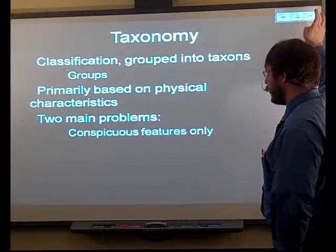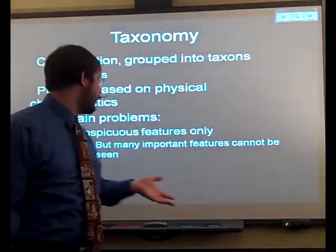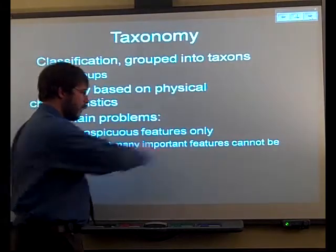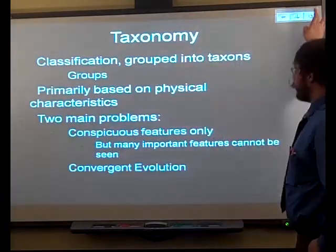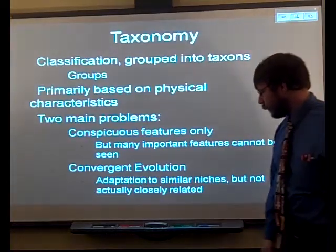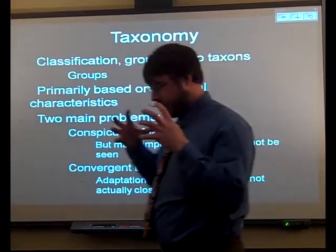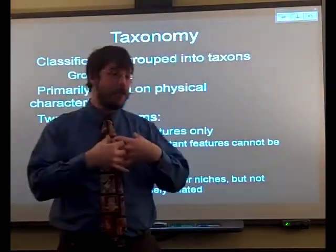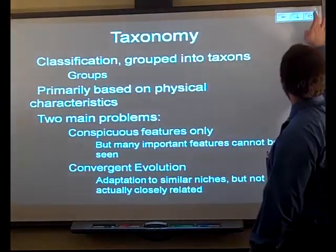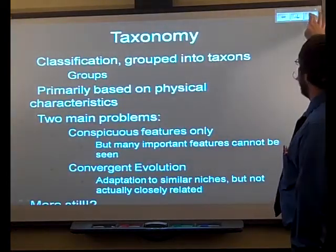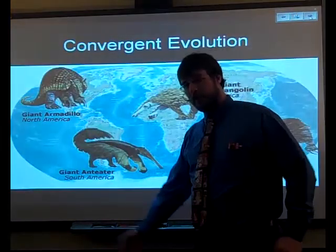So there are two main problems here. You're limited to features you can see. Now as technology increased, our ability to see these features increased, but we did miss a whole lot of different features. The other problem is that you're going to have some organisms with similar niches in different parts of the world, so they could evolve to have similar-looking features, although they're not actually really related at all. And that's called convergent evolution — this whole idea of speciation where things are changing separate from each other.